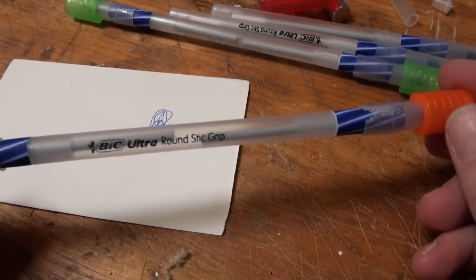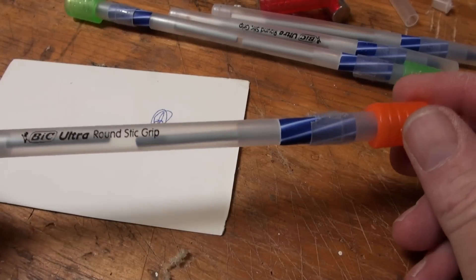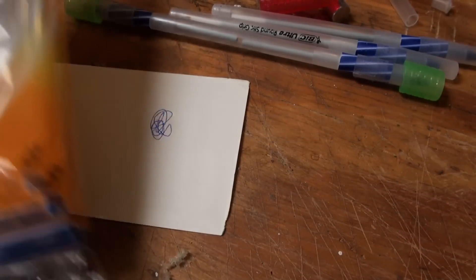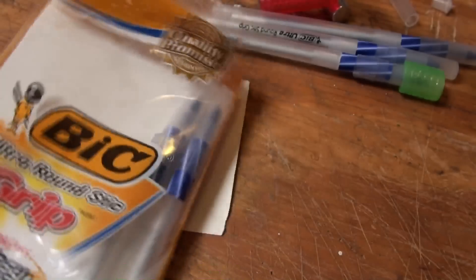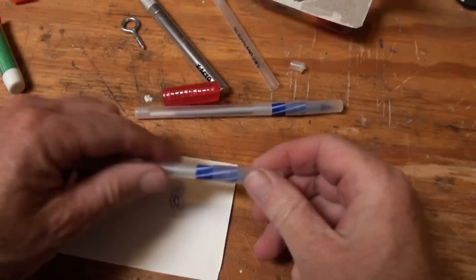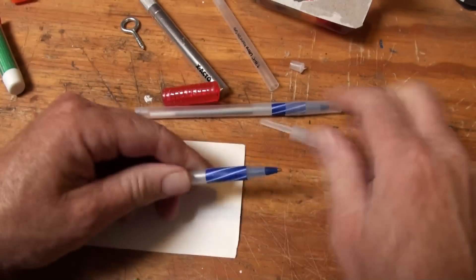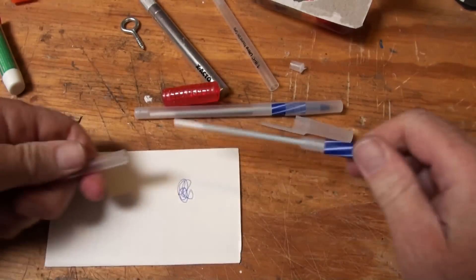It's made from the Bic Ultra round stick with grips. You can buy a 10-pack of these things. I got these at Walgreens. Take one of the pens, disassemble it.